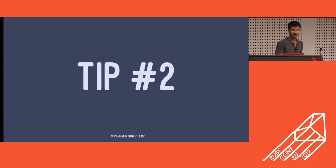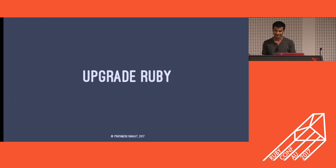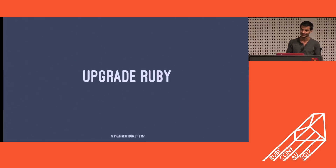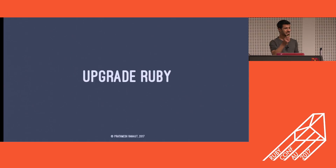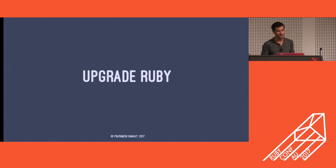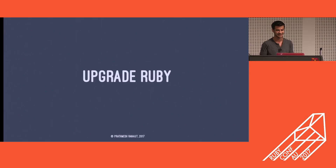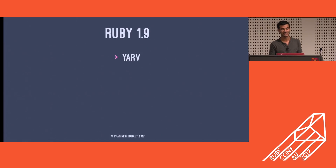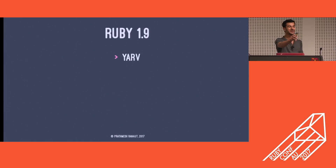Moving on to tip two: upgrade your Ruby. I met someone yesterday and we were talking about performance and I found out they were still using Ruby 1.8. The developers were too busy writing new features that they never got the time to upgrade their deprecated methods. For those running 1.8, please upgrade to 1.9. I can bet you a gelato that you'll be blown away — it has a completely new VM implementation called YARV, which stands for Yet Another Ruby VM.